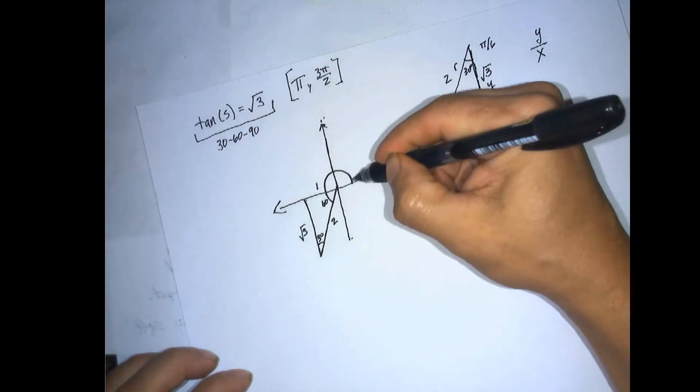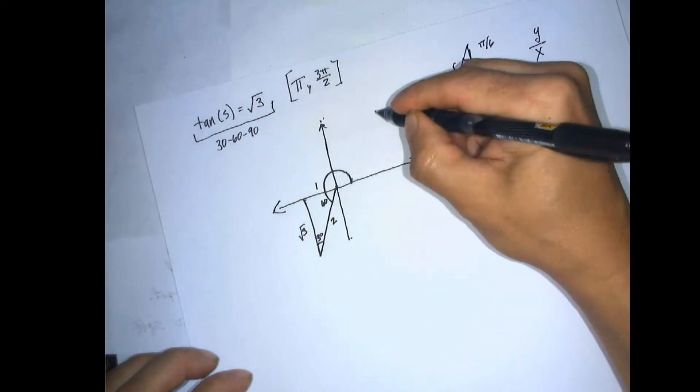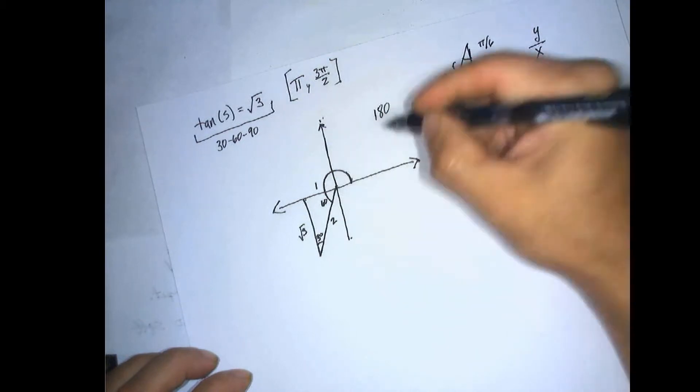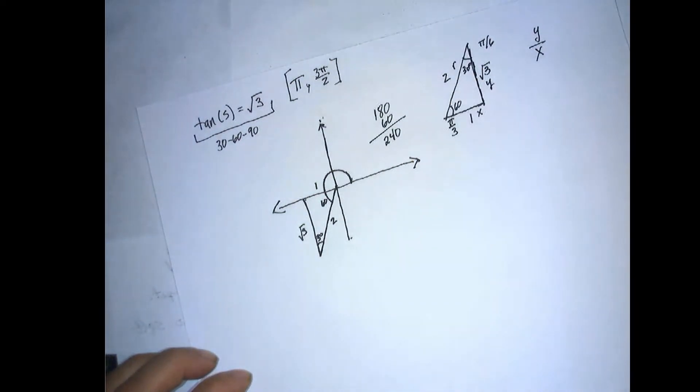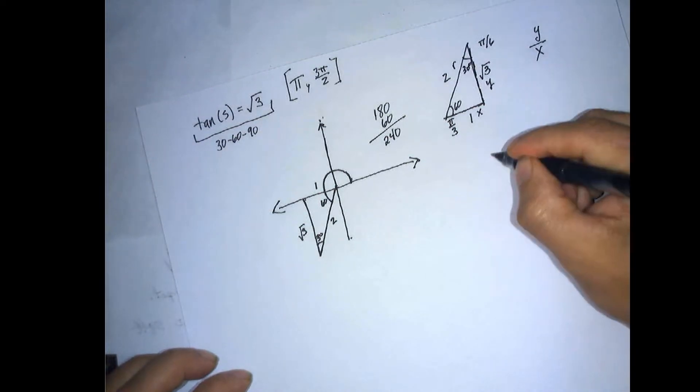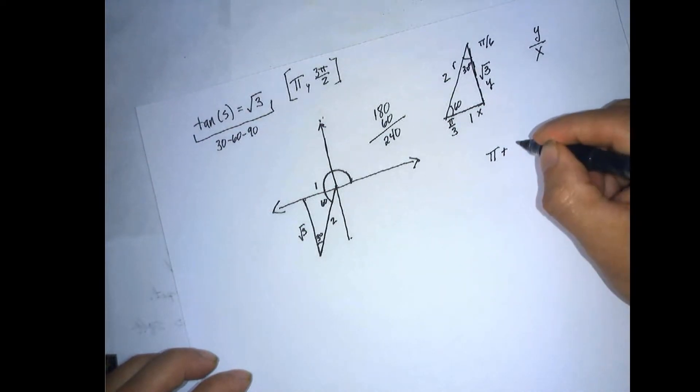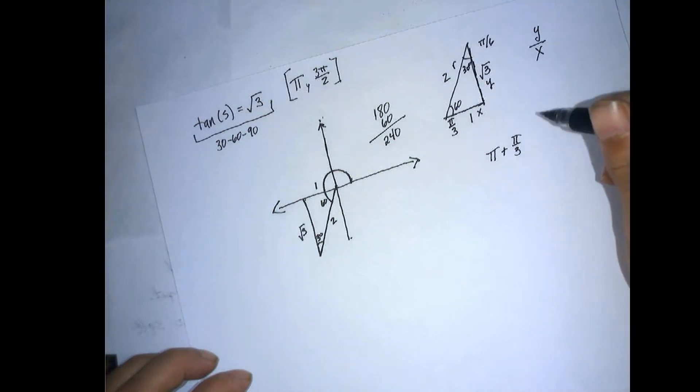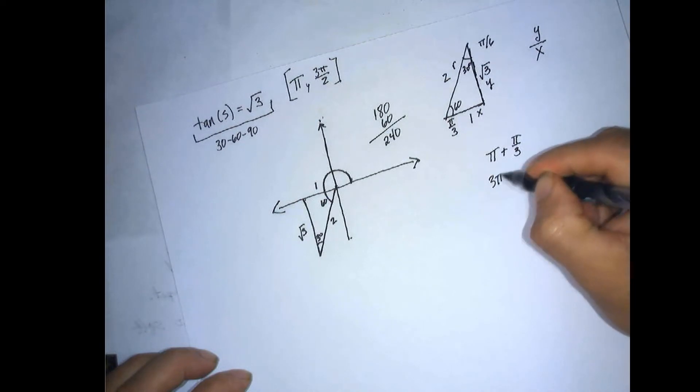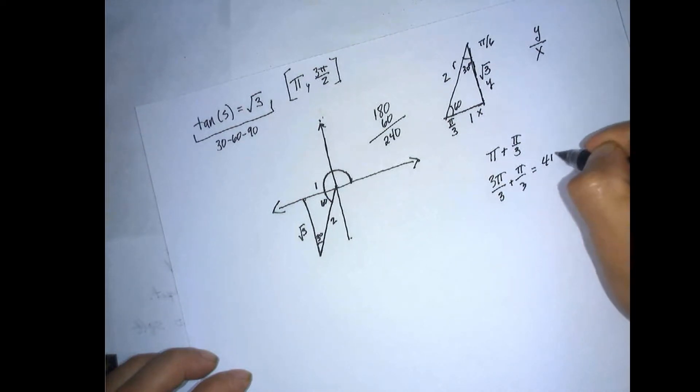So if we go all the way around here, we're at 180, and this far to 60, that's 240. And that's also pi plus pi over 3, which is 3 pi over 3 plus pi over 3 would be 4 pi over 3.